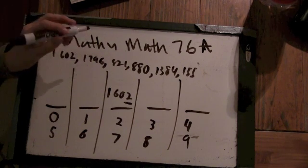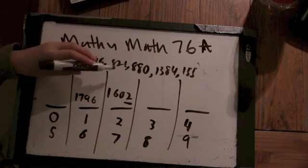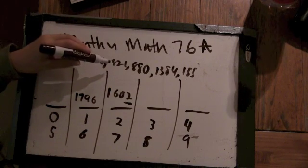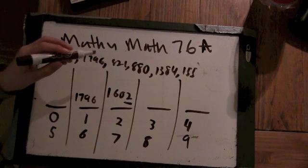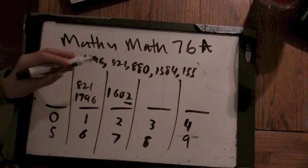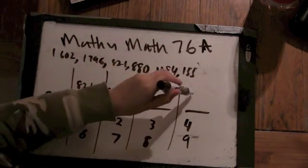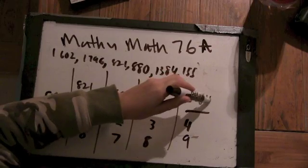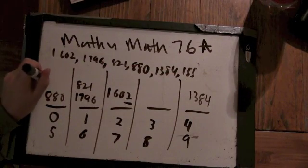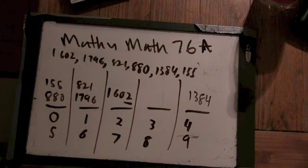So 1796 would go in here. 821 would also go in there. 880 would go in here. 1384 and 155. Okay. So look at that. We immediately find the two pairs that we found before.